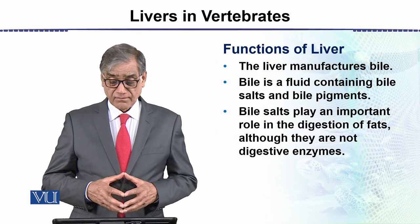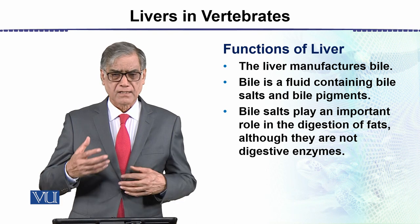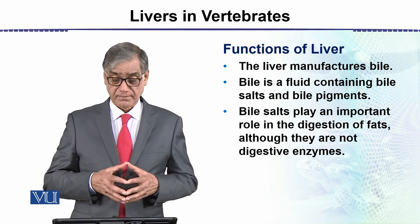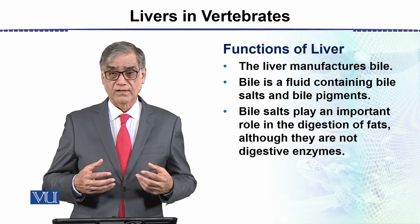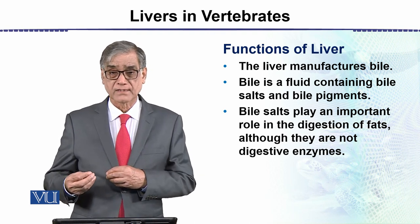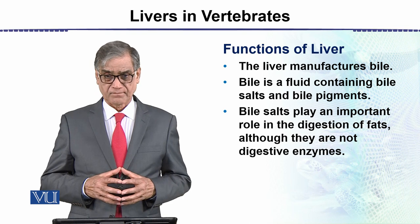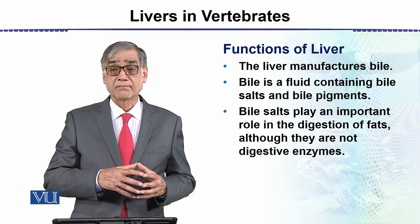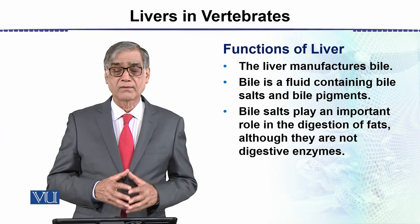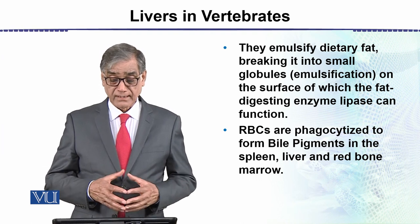The functions of the liver: the liver manufactures bile. Bile is a fluid containing bile salts and pigments. Bile salts play an important role in the digestion of fatty substances. Bigger globules are converted into smaller globules — this is called emulsification. Bile emulsifies the fats because it contains salts that help in breaking down the big globules into small globules.